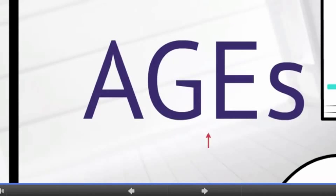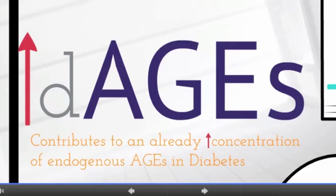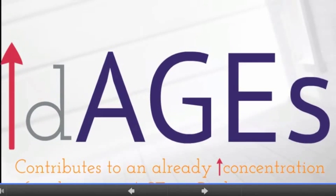In addition to AGEs that are formed endogenously, the modern diet represents an important exogenous source of AGEs. Most notably, diet-derived AGEs analogously contribute to the whole-body AGE pool and AGE-related disease pathologies. Exploring the formation of AGEs in various types of foods, including suggestions on reducing these glycotoxins in the diet, are described in the section 'Dietary Advanced Glycation End Products.'